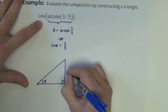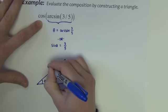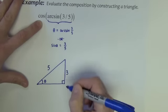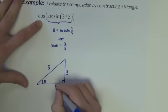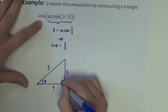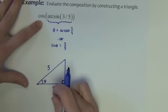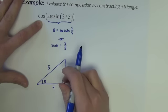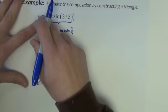Sine is opposite divided by hypotenuse. So if that's given off of the sine theta equals three-fifths, that's a three, four, five right triangle. So now I have this side right here. I'm now going to use the triangle to evaluate the cosine.